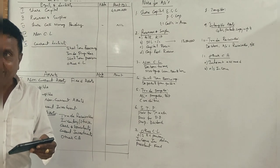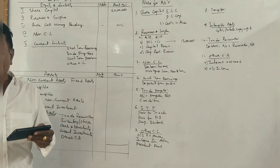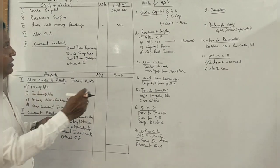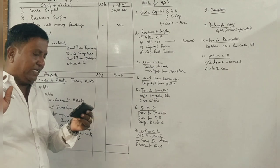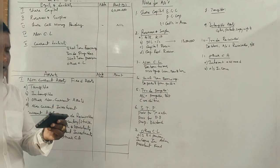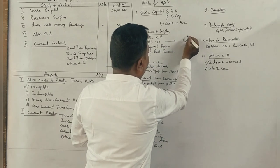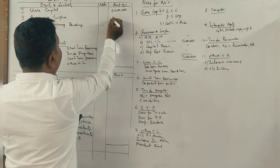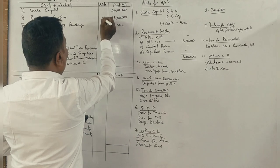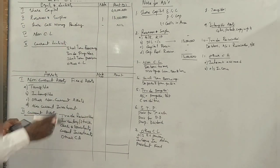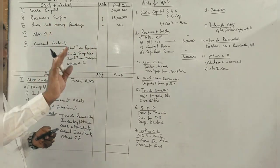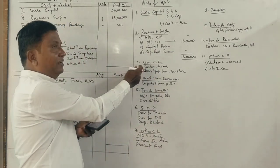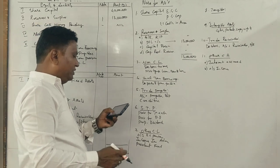We should look only at the credit side items on the liability side. Reserves and surplus: profit and loss account is 13 lakhs. We have no general reserve, so the total is 13 lakhs — assign note number 1. Share capital money pending is always zero. Under non-current liabilities, debentures are 10 lakhs.